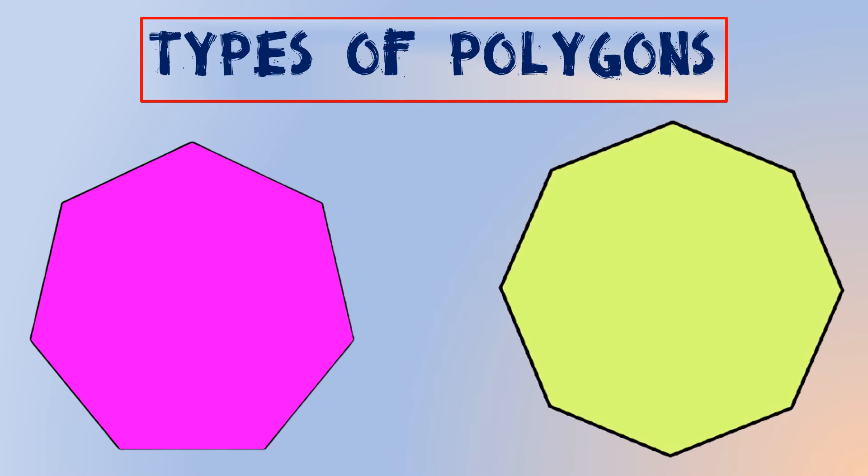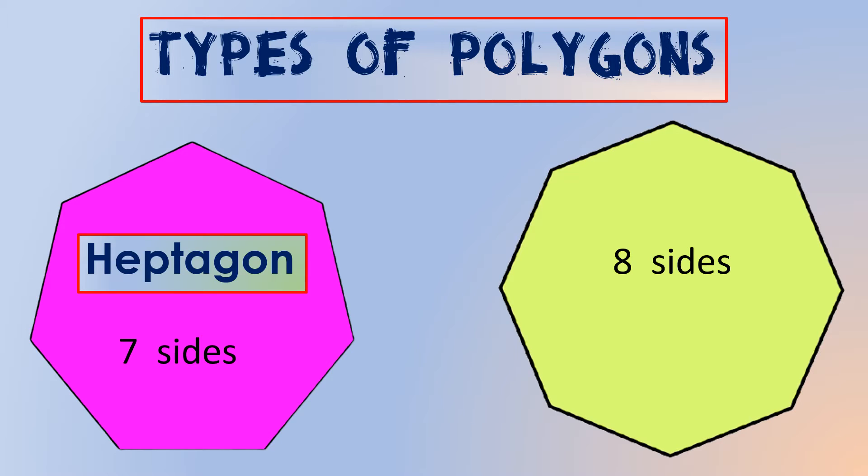A seven-sided polygon is called a heptagon, and a polygon with eight sides is called an octagon.